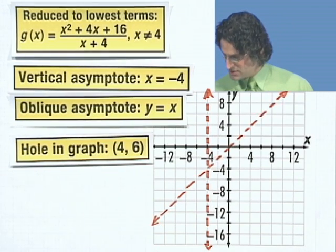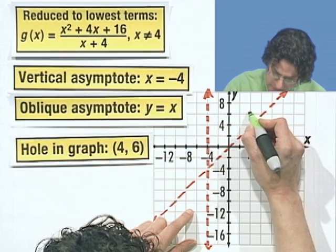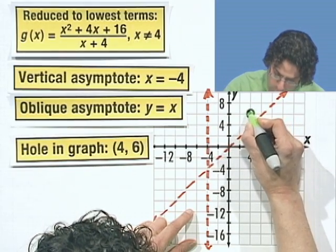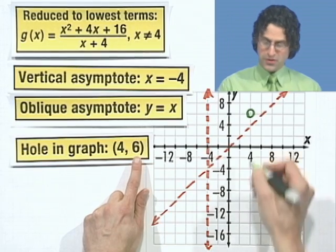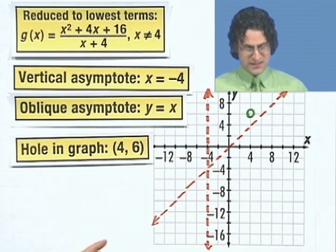So here we go. What color should I use? I guess I'll use green. So 4 comma 6, we put a hole right there. Do you see why it was important to find the height of the hole so I know exactly where to put it, how high up or down? Well, now I just can plot points and see what's going on here.